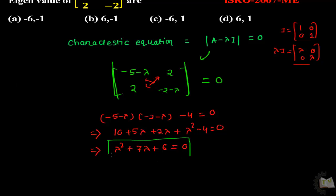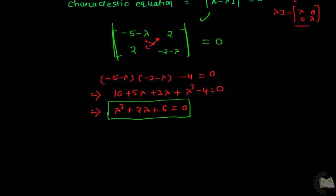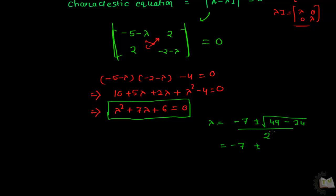This is a quadratic equation, so we will find two values of lambda. Using the quadratic formula: lambda equals minus B plus or minus square root of (B squared minus 4AC), divided by 2. That gives: minus 7 plus or minus square root of (49 minus 24), divided by 2. The square root of 25 is 5, giving two values: lambda equals minus 6 and lambda equals minus 1.